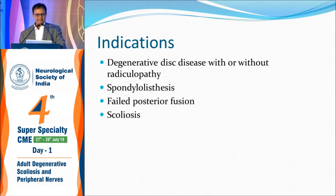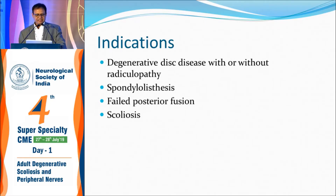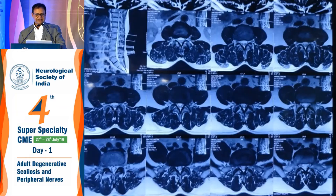The indications are similar: failed fusions, scoliosis, spondylolisthesis, or degenerative spine with or without radiculopathy. This is a classical case — a black disc with bilateral foraminal stenosis and no central canal stenosis.